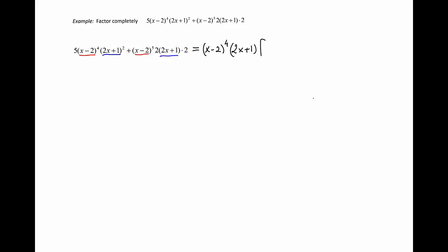What remains if we factor out those expressions is 2x plus 1 in the first group, and from the second group, x minus 2 to the first power because we took four factors already out, plus 2. The 2x plus 1 was taken out and there is another 2.